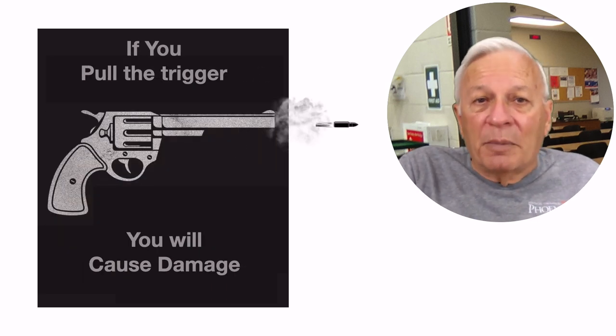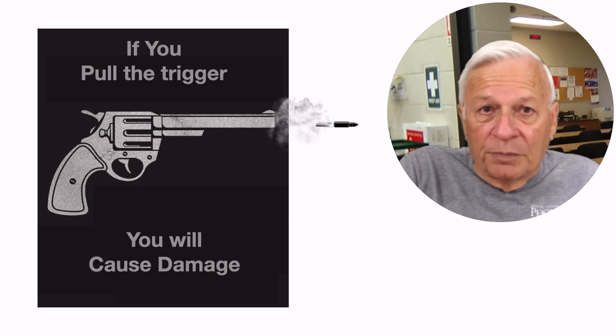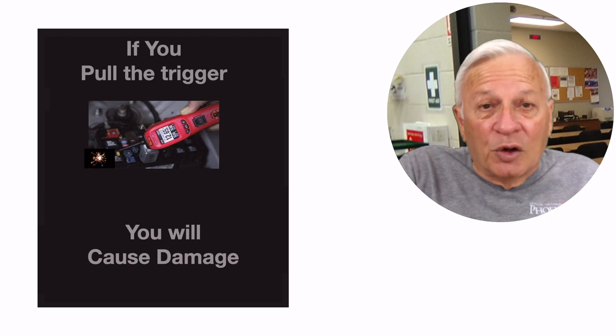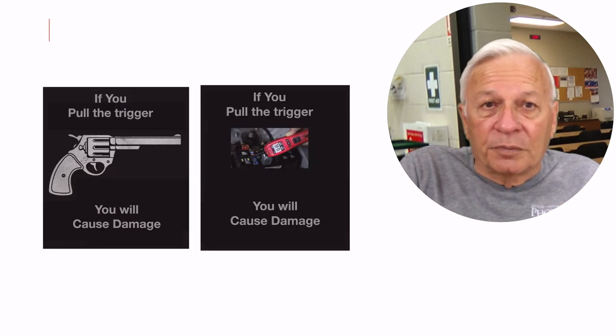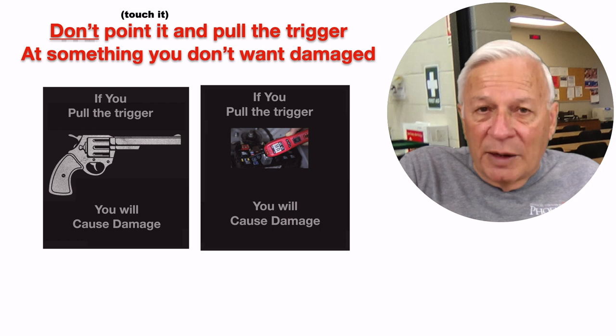Now here's my point. If you pull the trigger, the bullet will go where it is aimed, and that could easily cause damage. If you pull the trigger on the power probe, the current will go where it is aimed, and that could easily cause damage. So don't point it and pull the trigger at something that you don't want damaged.